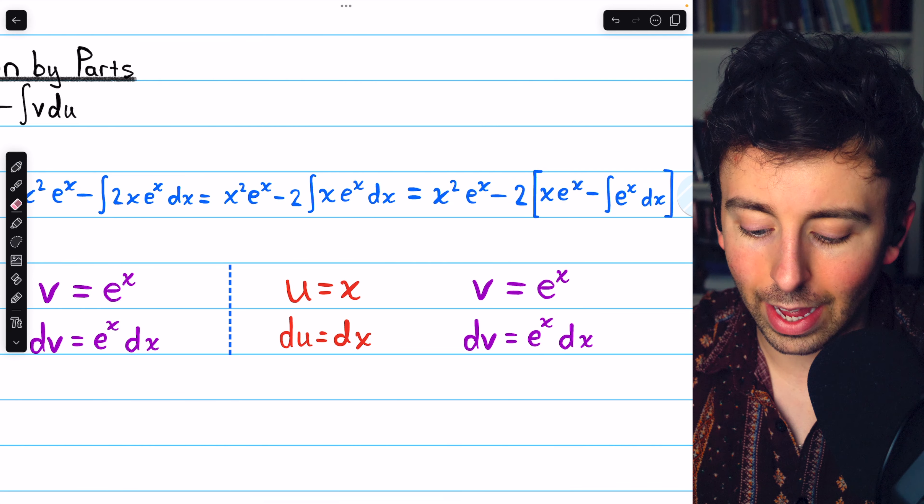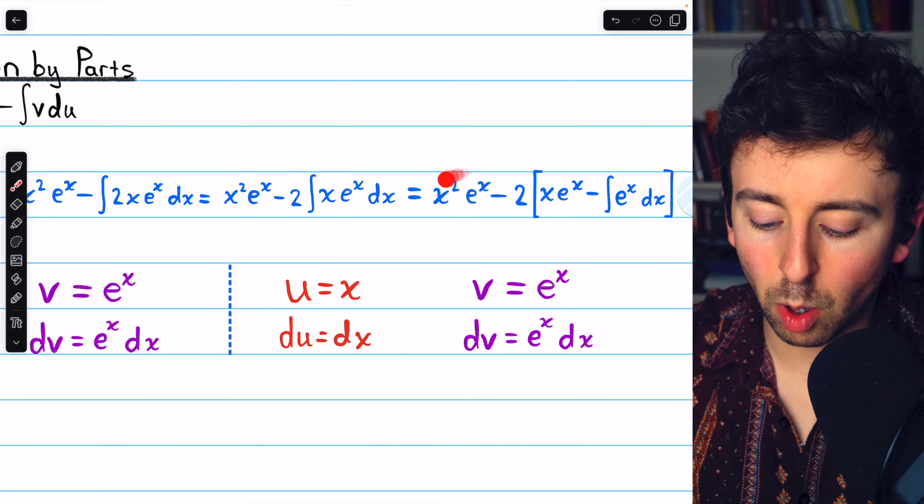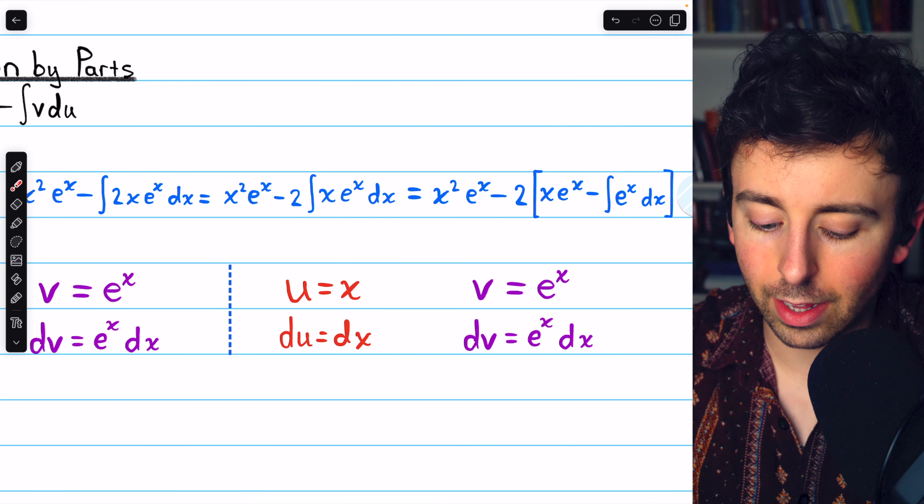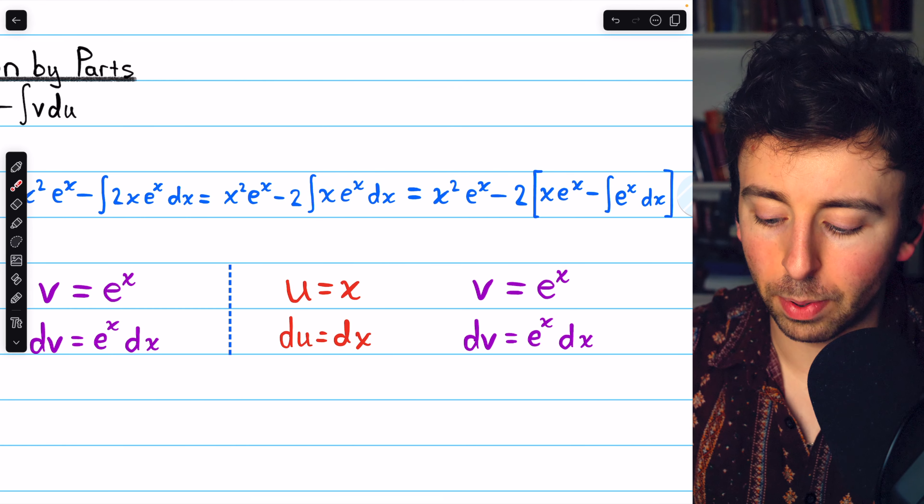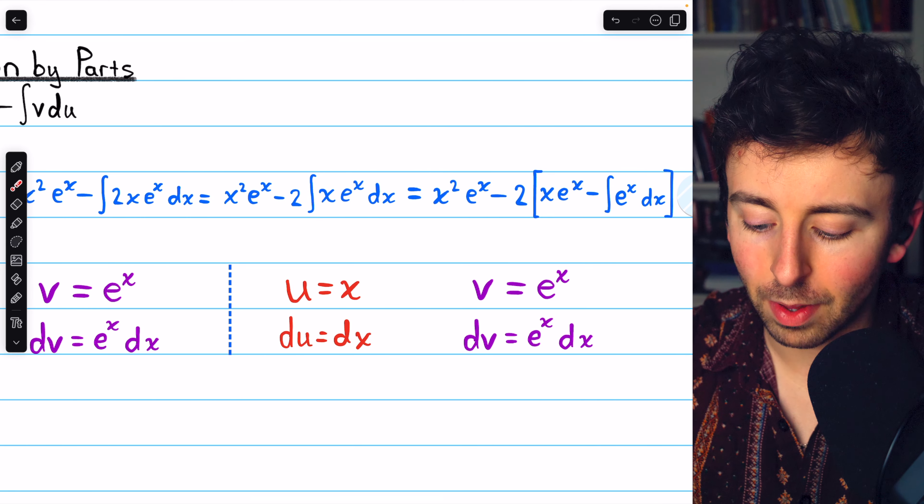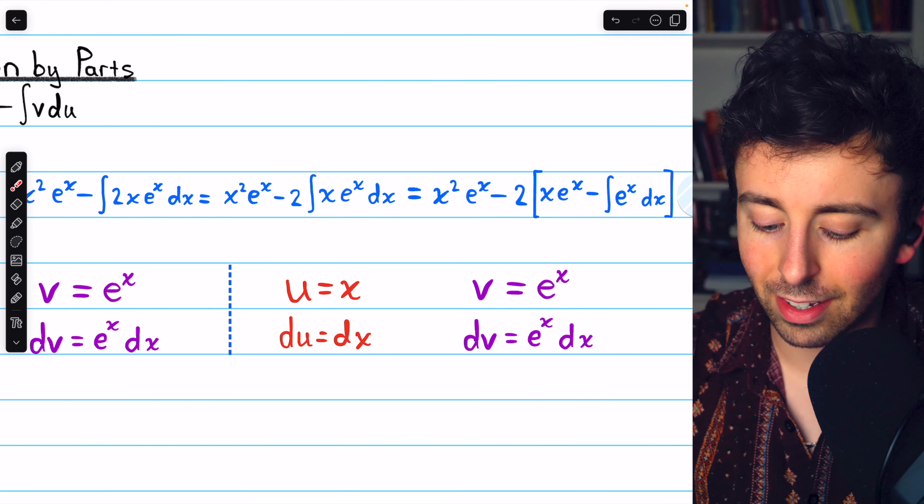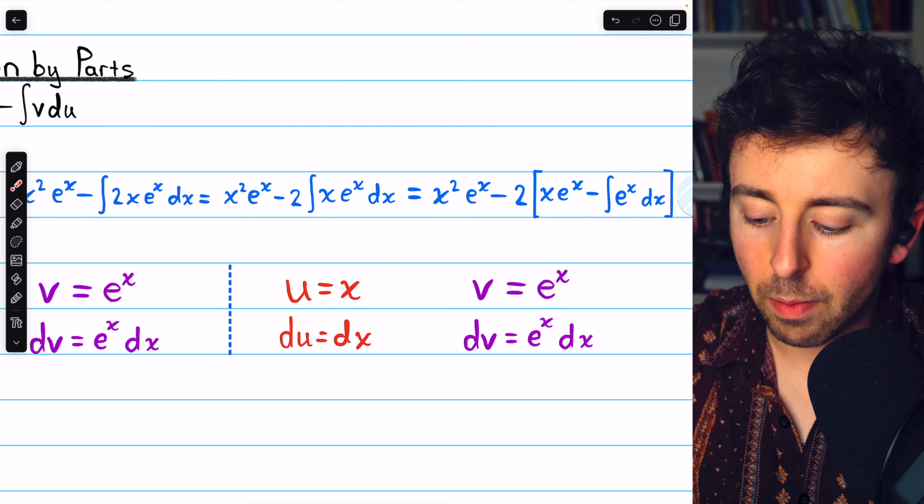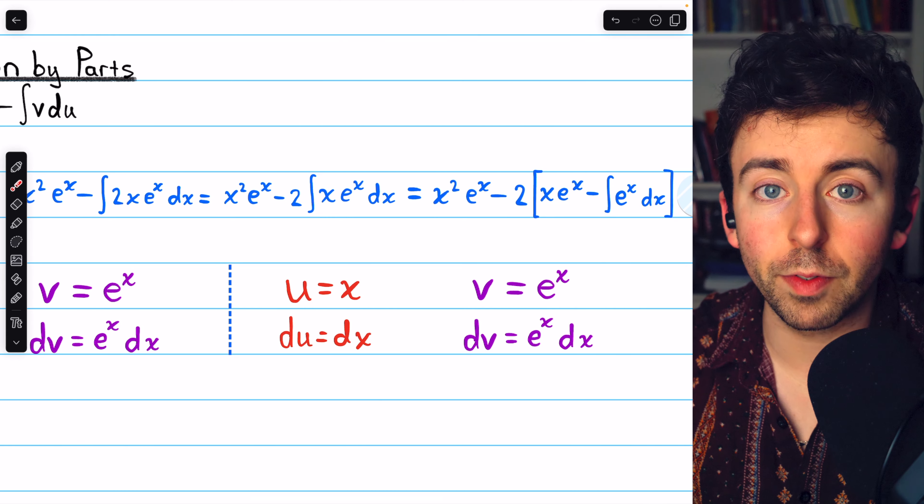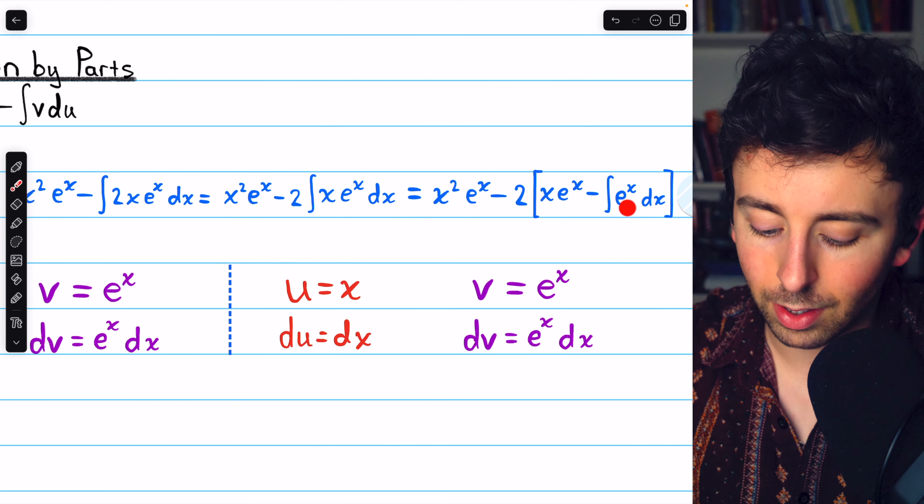All right, now we can go ahead and apply the formula. This is what we already had before: x squared e to the x minus 2 times this integral, which we're going to put in brackets. So now, applying the formula, it's uv, so x times e to the x, minus the integral of v du.